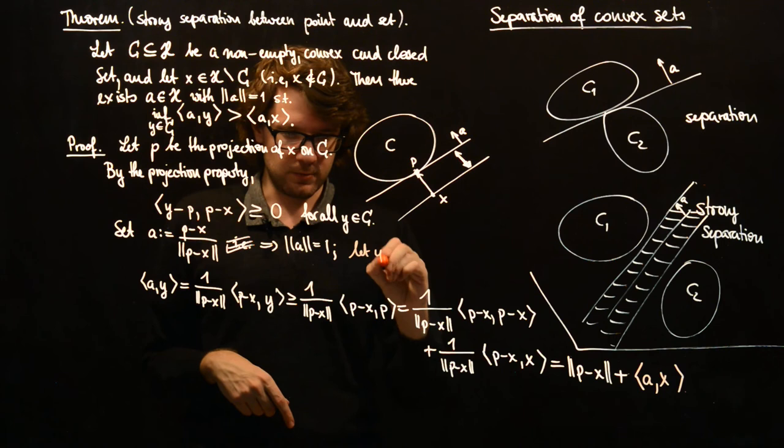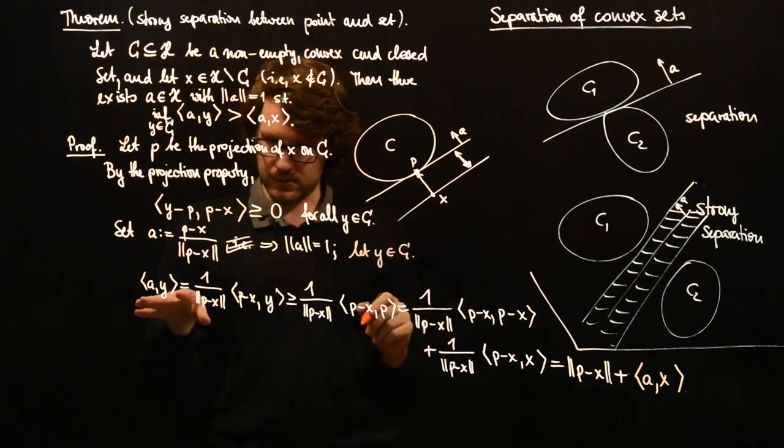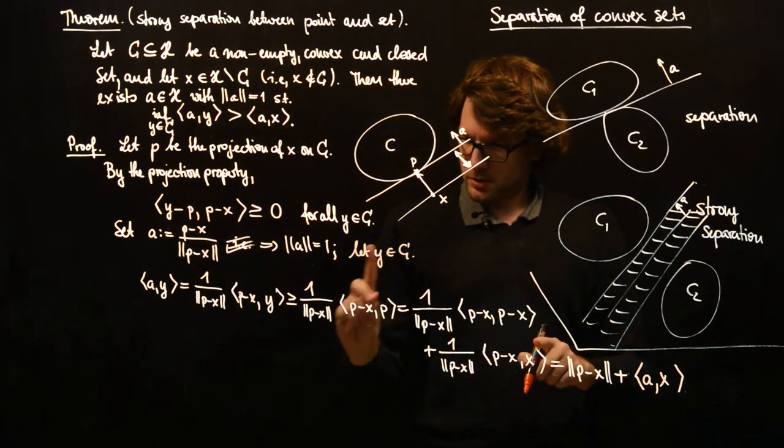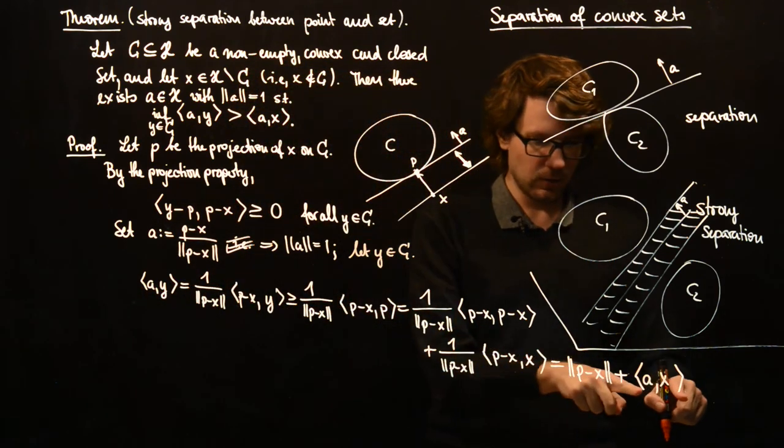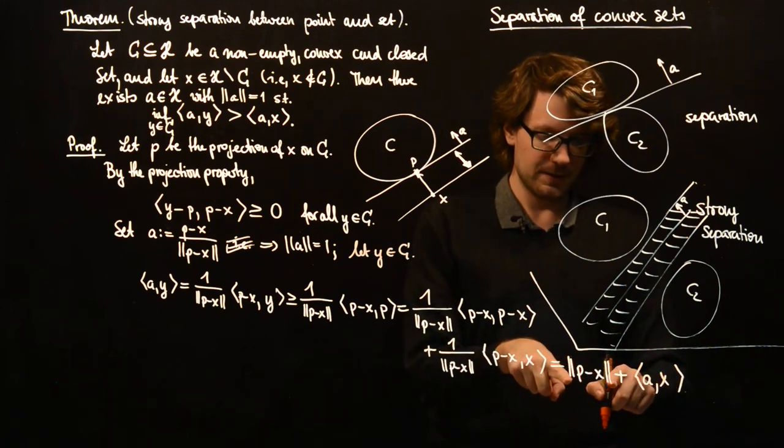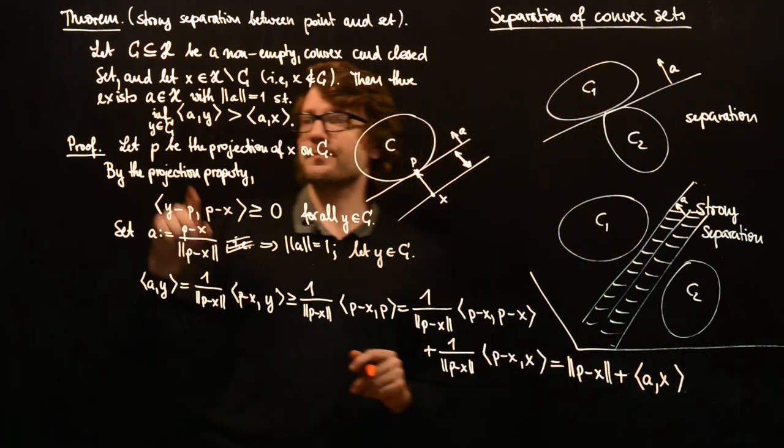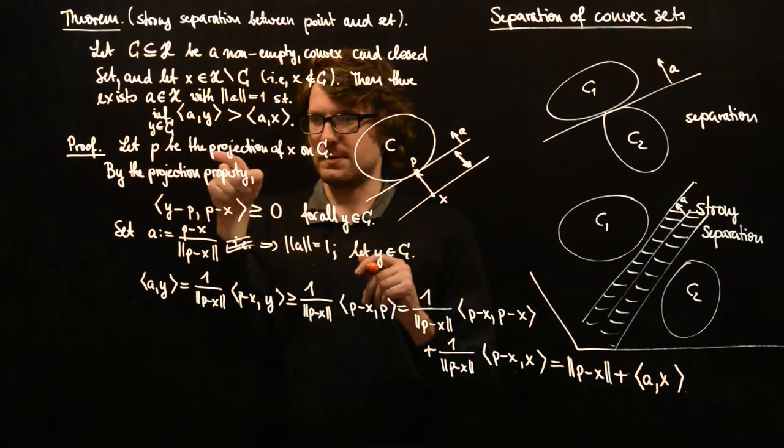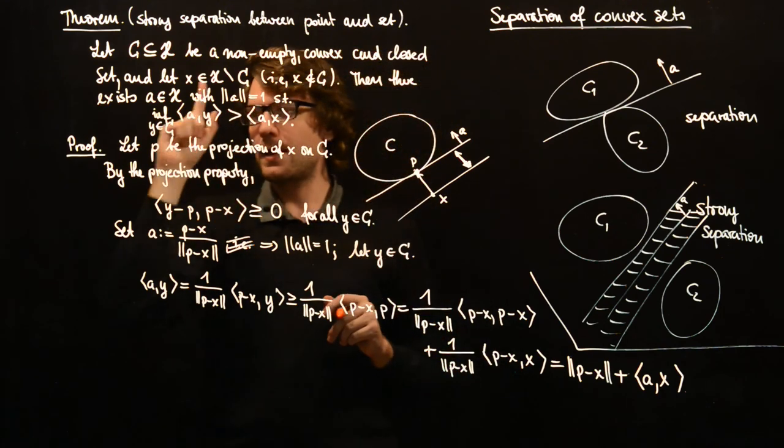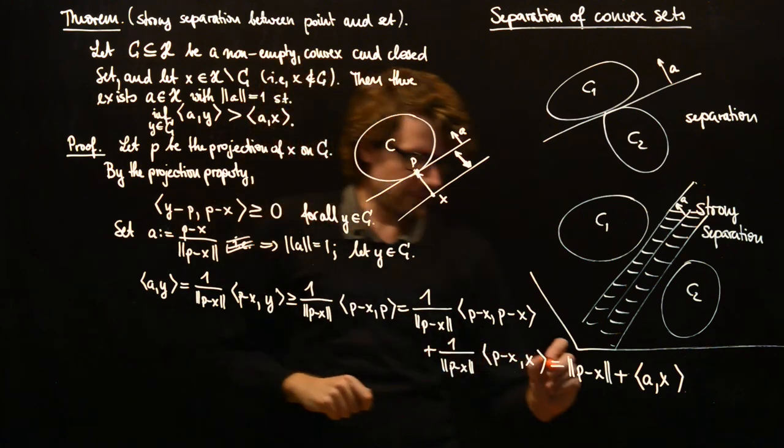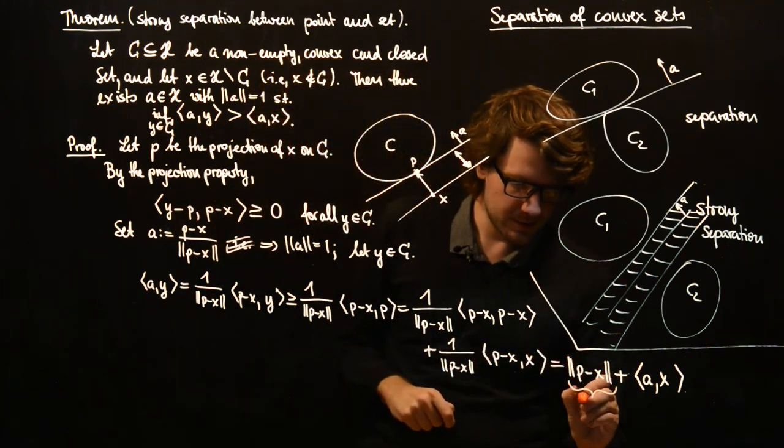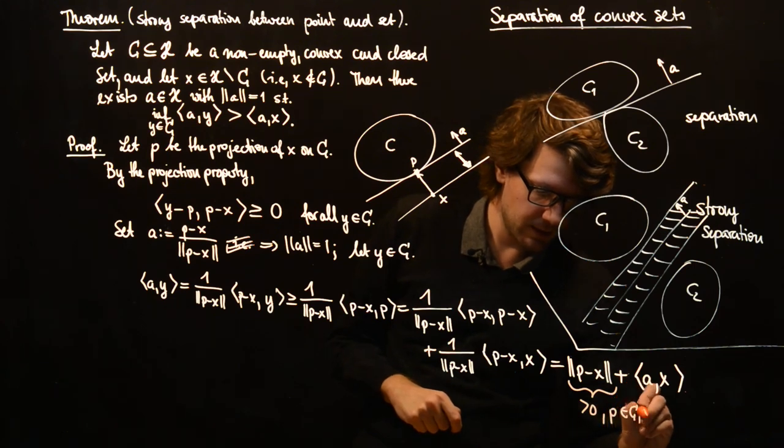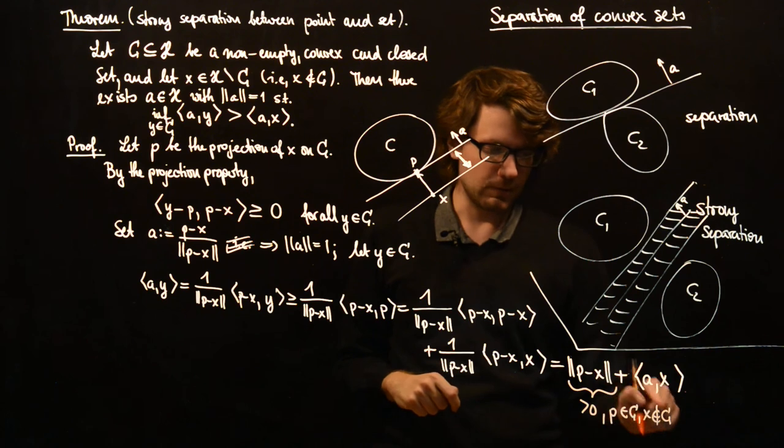So, by the way, let Y be in C. So whenever we have the inner product of A with an element in C, we are greater or equal than the inner product of A with X plus norm of P minus X. And since P is in C, this is one of the properties of the projection, and X is not in C, we have that this is greater than zero because P is in C and X is not in C. So they cannot be equal.